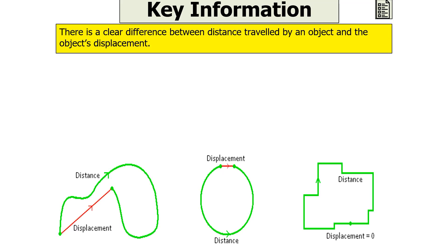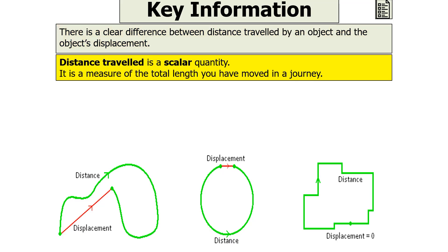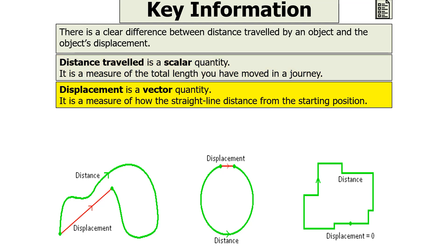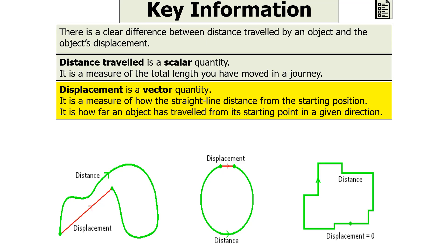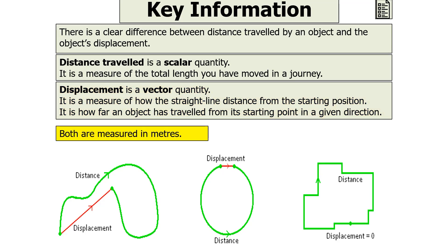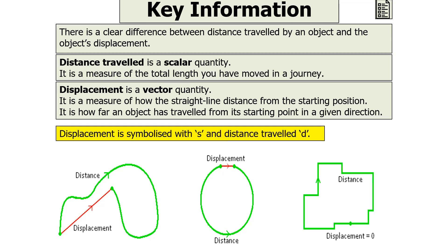There is a clear difference between the distance travelled by an object and the object's displacement. Distance travelled is a scalar quantity — it's a measure of the total length you've moved in the journey — whilst displacement is a vector quantity and it's a measure of how far the straight-line distance is from the starting position. Both are measured in metres, but displacement is symbolised with an S, whilst distance travelled is symbolised with a D.